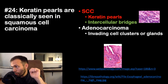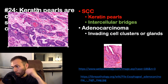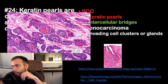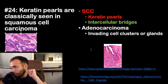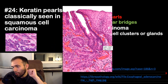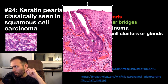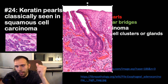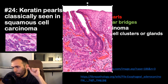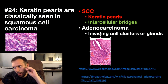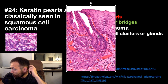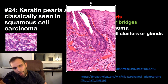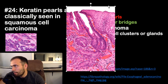Fact twenty-four: keratin pearls are classically seen in squamous cell carcinoma. On histology, squamous cell carcinoma shows keratin pearl formation. Adenocarcinoma shows invading cohesive clusters of glands with cytologic features of malignancy including variable nuclear size and shape. Barrett's esophagus appears histologically as an abrupt transition from stratified squamous epithelium to columnar glandular epithelium, representing the dysplastic process that eventually leads to adenocarcinoma.